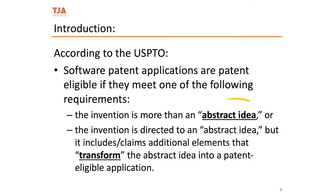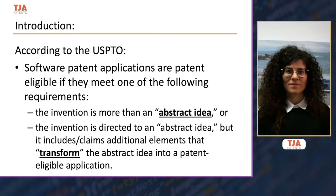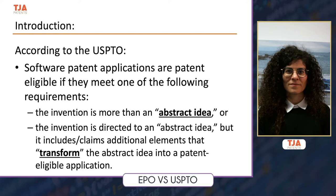From the USPTO perspective, software is eligible if the invention, taken as a whole, is not an abstract idea — or if it is abstract, that abstract idea includes additional elements that transform it into a patent-eligible application. If we claim our invention in a broad and generic way, the claim will likely be categorized as abstract. However, if we describe and claim our invention with significant technical detail — including the steps, algorithm, or process it implements — it will likely be categorized as not directed to an abstract idea and therefore patent eligible.